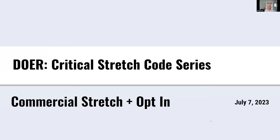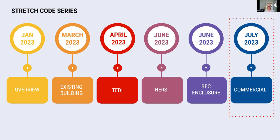Welcome to the last in our series on the stretch code published by DOER. This one is on the commercial stretch and the opt-in. This is one of many in our series. We started in January with a big overview of what was coming in the codes, and then in March we had a talk about existing buildings, as those are now being covered by the stretch code.